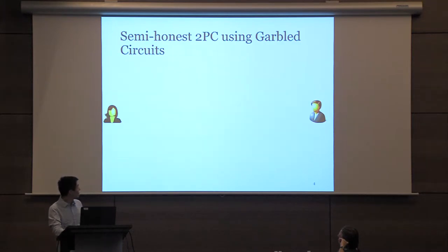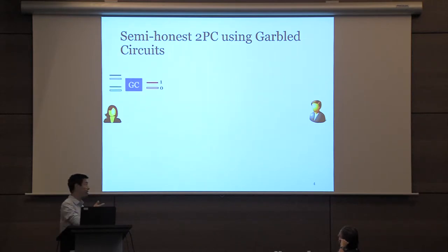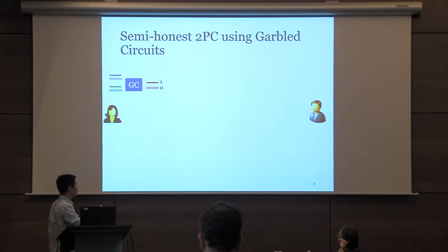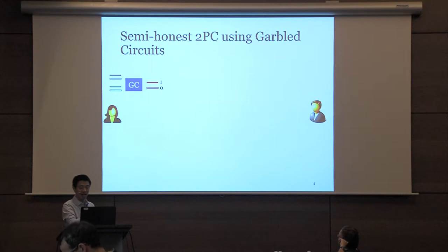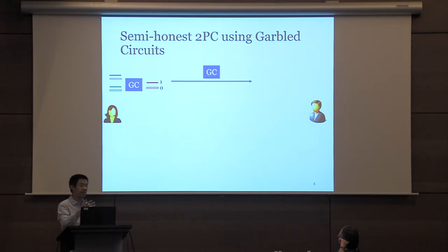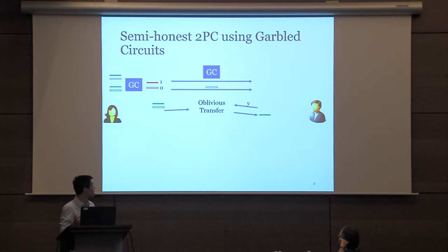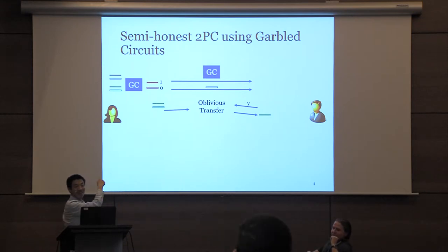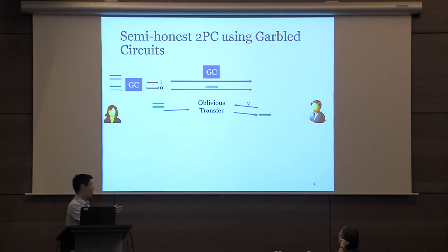Let me start with a semi-honest 2PC protocol based on garbled circuits. Assume that Alice and Bob want to compute a function with one input from each side and one output. The first step is to generate a garbled circuit with its related garbled keys — solid bars represent one bit and empty bars represent zero bit. Alice sends the garbled circuit and the labels corresponding to her own input, then they run an oblivious transfer protocol that allows Bob to learn his own label without Alice learning the value of Y. Then Bob evaluates the circuit and gets the output.